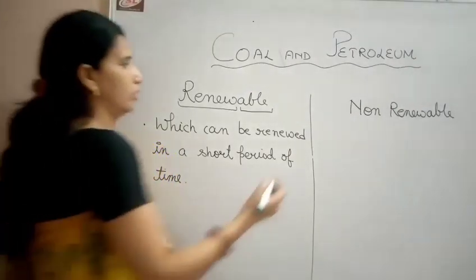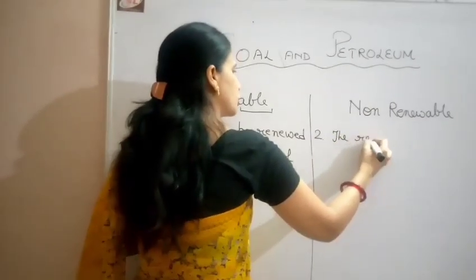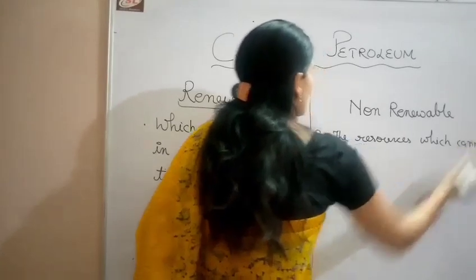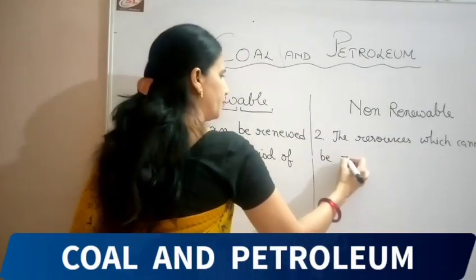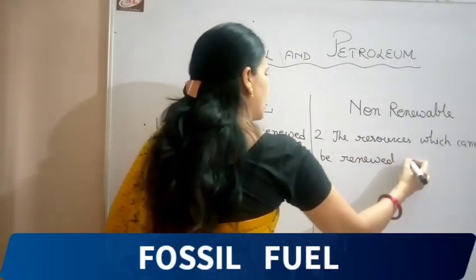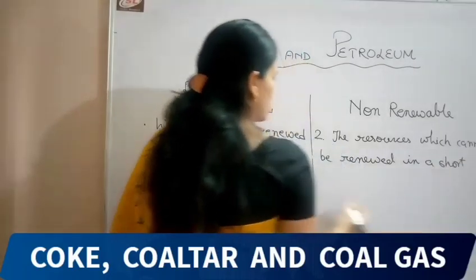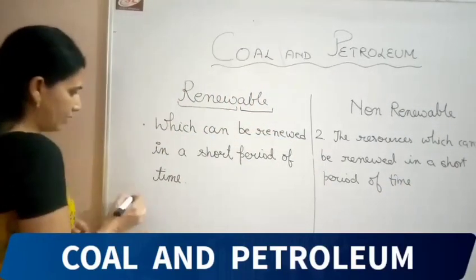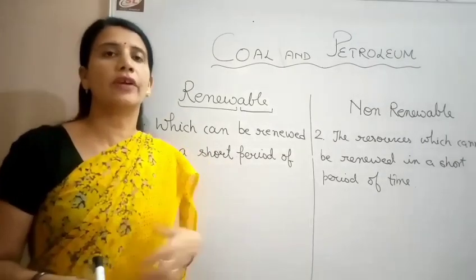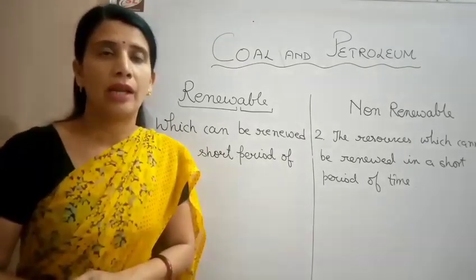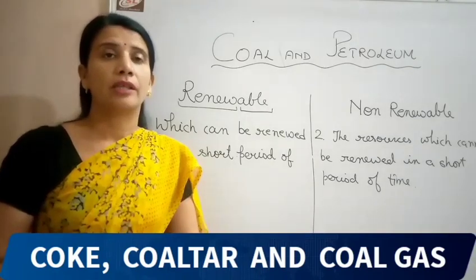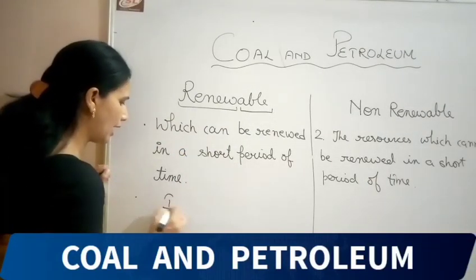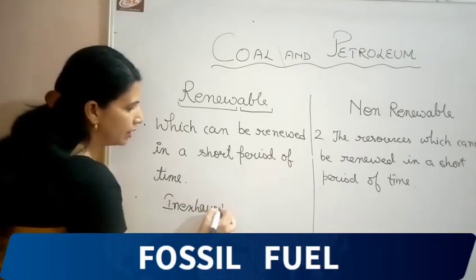What is non-renewable? The resources which cannot be renewed in a short period of time, or which require thousands of years to get renewed, are called non-renewable resources. If renewable resources are renewed again and again in a very short period of time, it means they will not end — they are inexhaustible. So renewable resources are inexhaustible; they will never end.